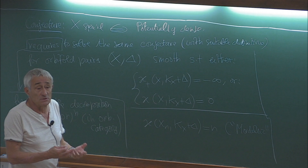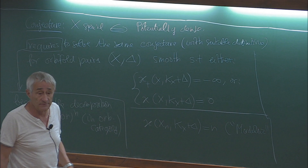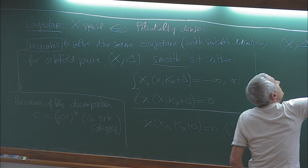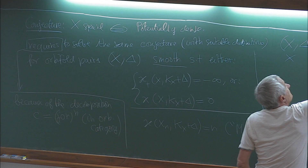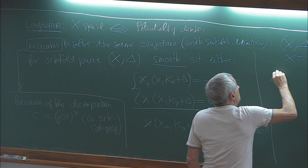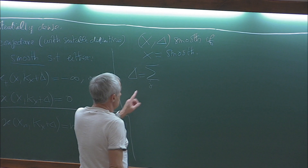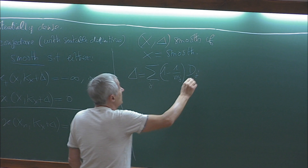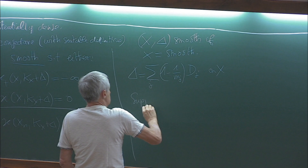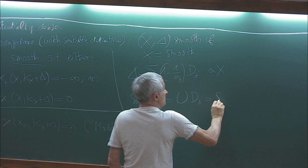This looks simpler, but on the other hand we have to deal with a larger set of objects. Let me recall what is the meaning of (X, delta) smooth. This means that X is smooth, and delta is a finite sum over some j's of (1 minus 1/m_j), with divisors delta_j on X, with the support of delta being the union of the D_j, which is a simple normal crossings divisor.